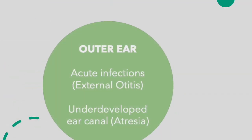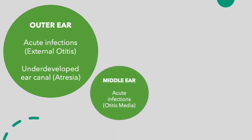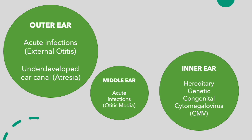If we get a little more specific, we can look at the different parts of the ear that can cause hearing impairments. Looking at the outer ear, acute infections such as external otitis or an underdeveloped ear canal could result in a hearing impairment. Moving on to the middle ear, there's otitis media, which is another form of an acute infection. And for the inner ear, this is where you can have hereditary or genetic issues as well as congenital factors and CMV virus.